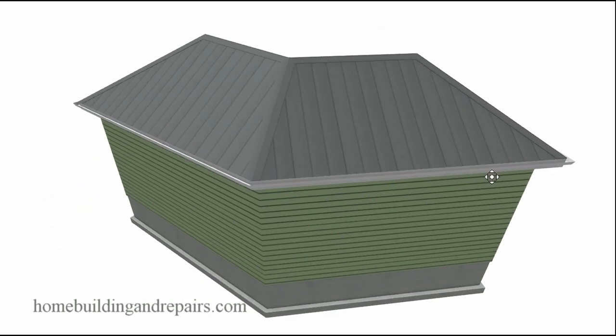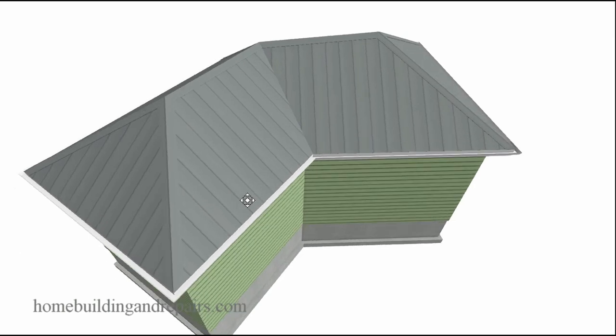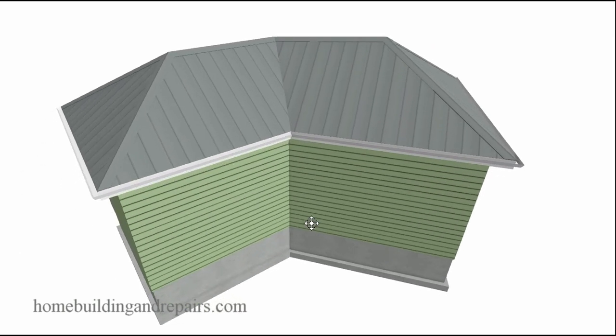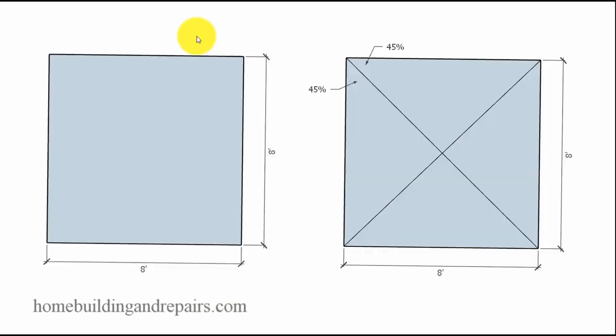So, let's see if I can make some sense out of this. Now, before we look at how to figure out the intersecting ridge and building at a 45-degree angle, let's just go ahead and take a look at a couple of squares here. We're going to start with the basics, and if we have a square that's 8 foot by 8 foot, and we wanted to find the center for our post...